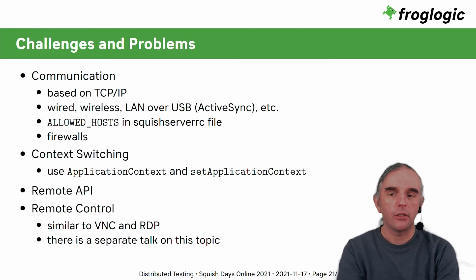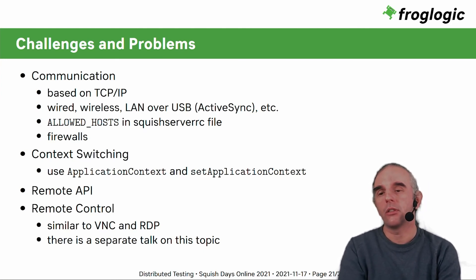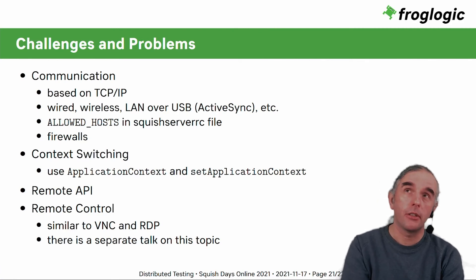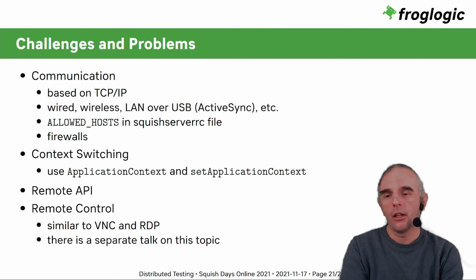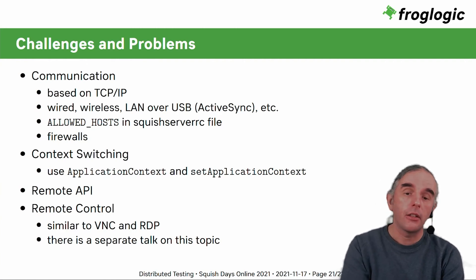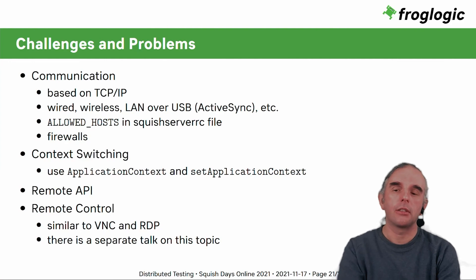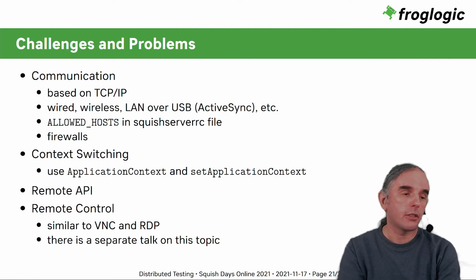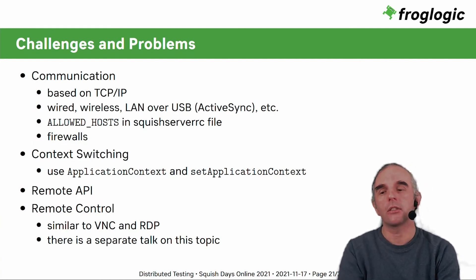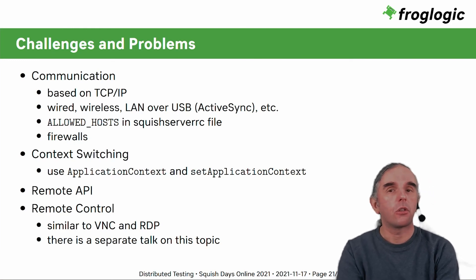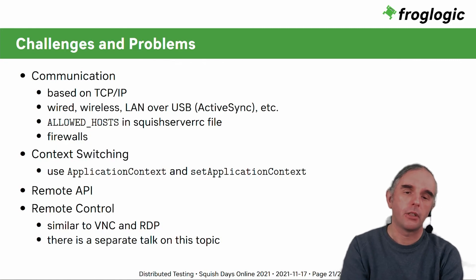Finally, Squish has a very nice remote API so you can also do non-GUI things on your remote or distributed application — for example, run command line scripts. In recent versions of Squish we also got support for remote control, which is similar to VNC or RDP. From Squish you can see the desktop of the machine on which your application is running, which is convenient for monitoring, additional tasks, and setups. There will be a separate talk on that topic as well.